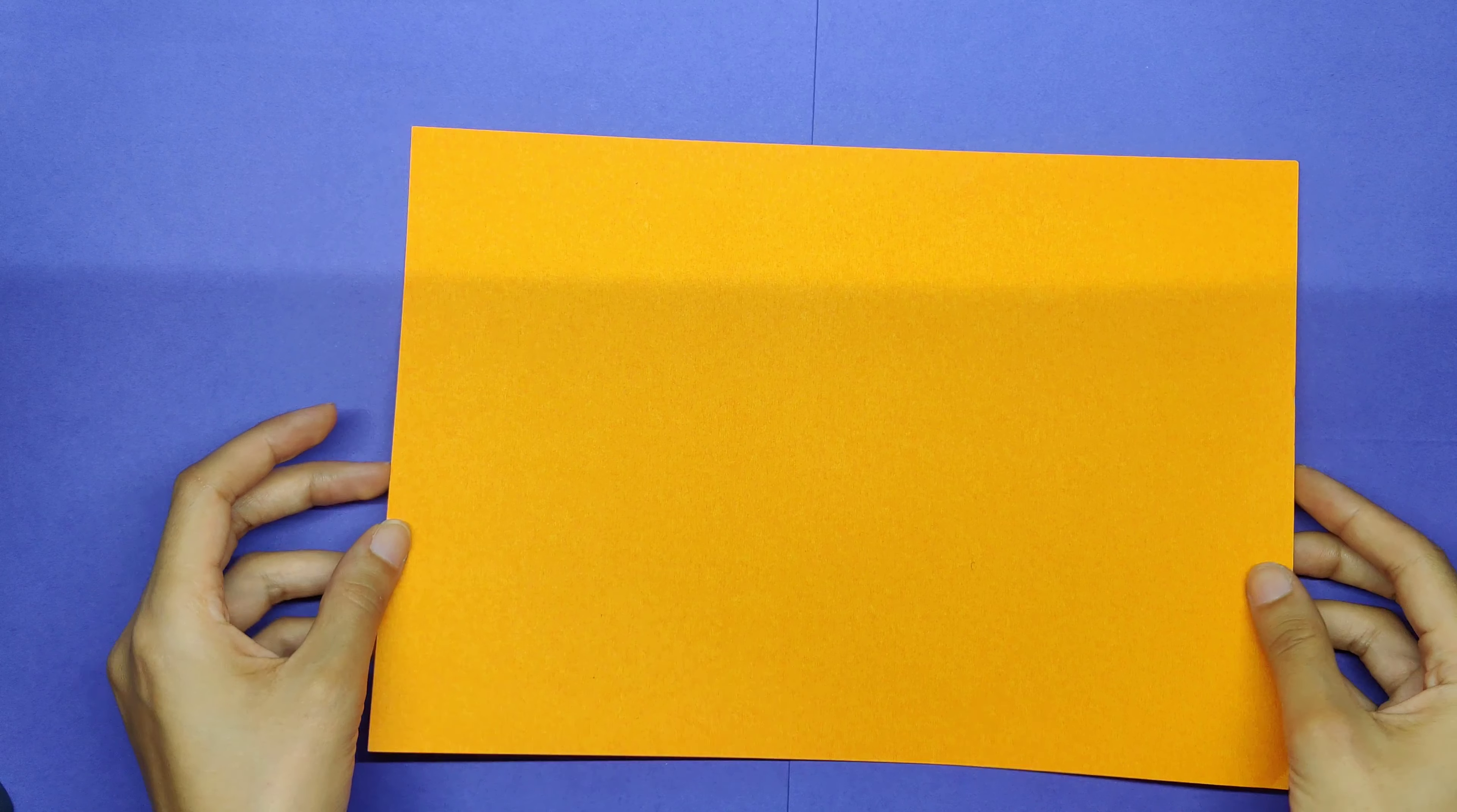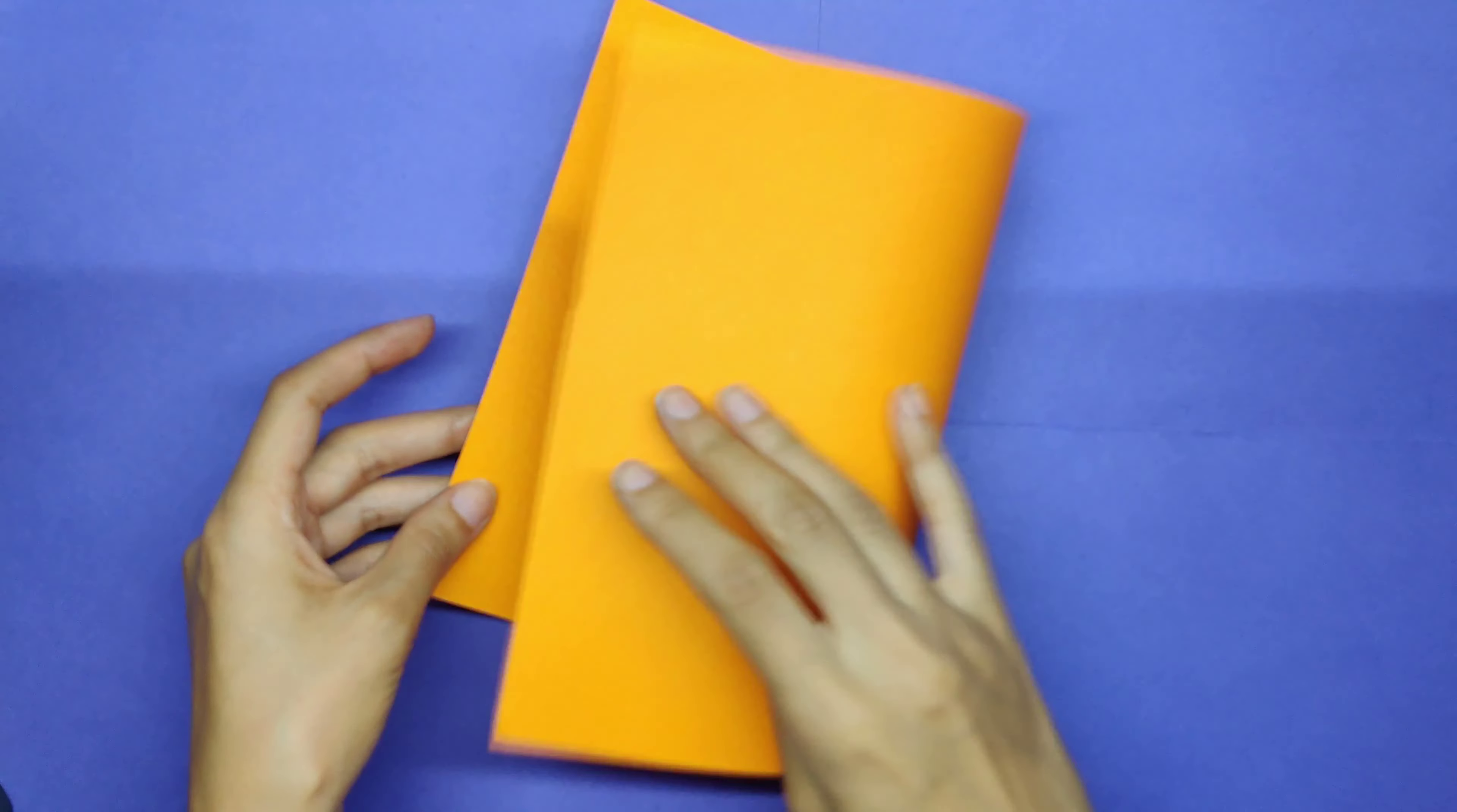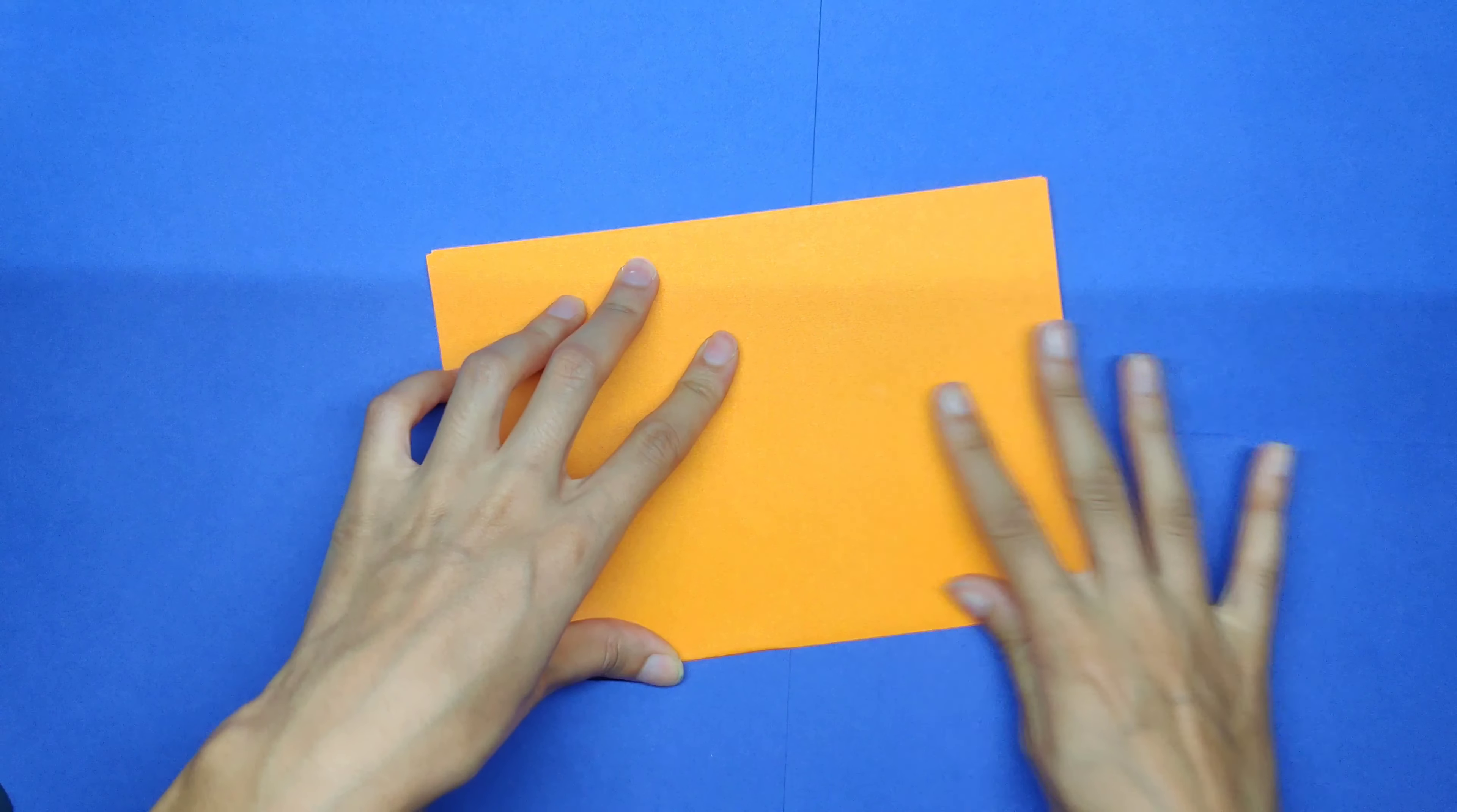The first animal I'll be making is a cat. What I need to do first is to fold my paper into halves. Make sure the two lines are together.